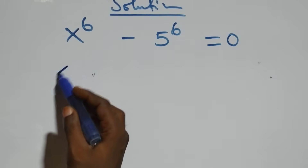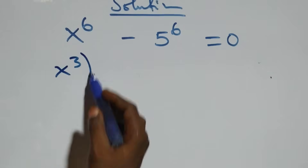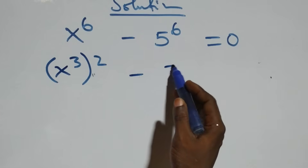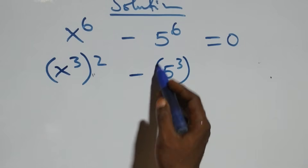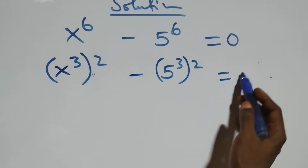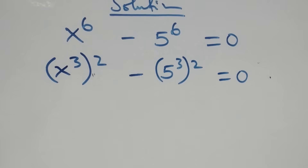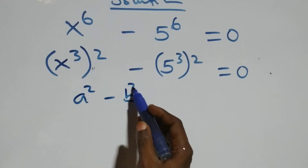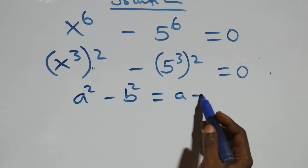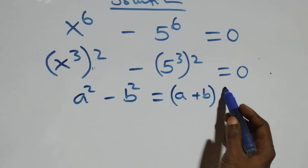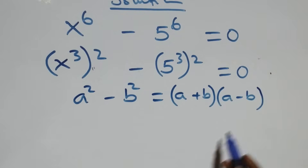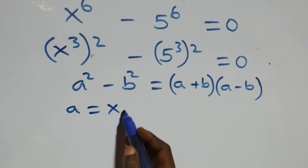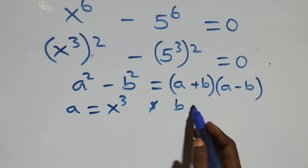From here we can write this as x raised to power 3, then raised to power 2 — since 2 times 3 gives us 6 — then minus 5 raised to power 3, then raised to power 2, equals to 0. This follows the difference of two squares: a squared minus b squared equals a plus b into bracket times a minus b, where a is x raised to power 3 and b is 5 raised to power 3.